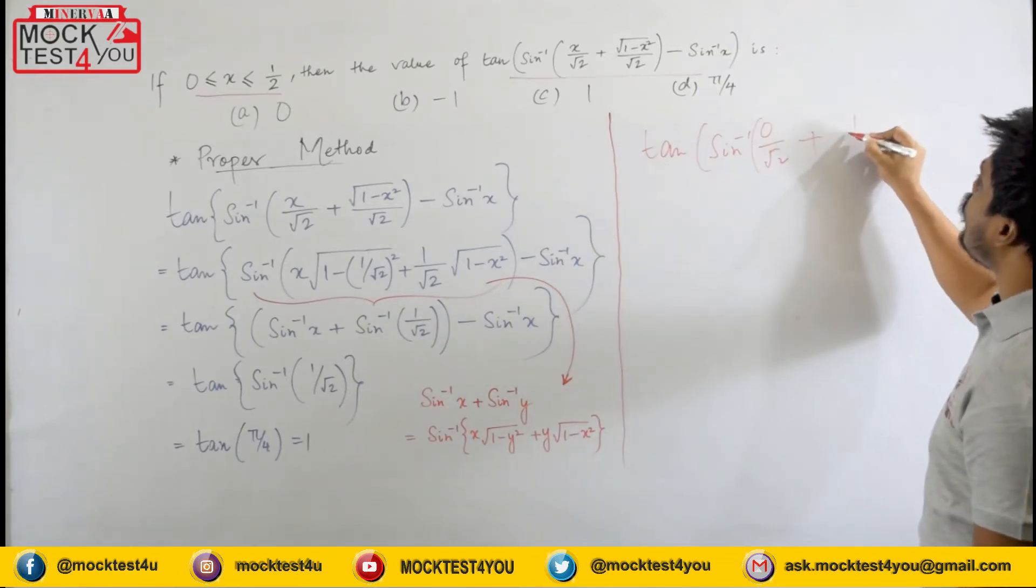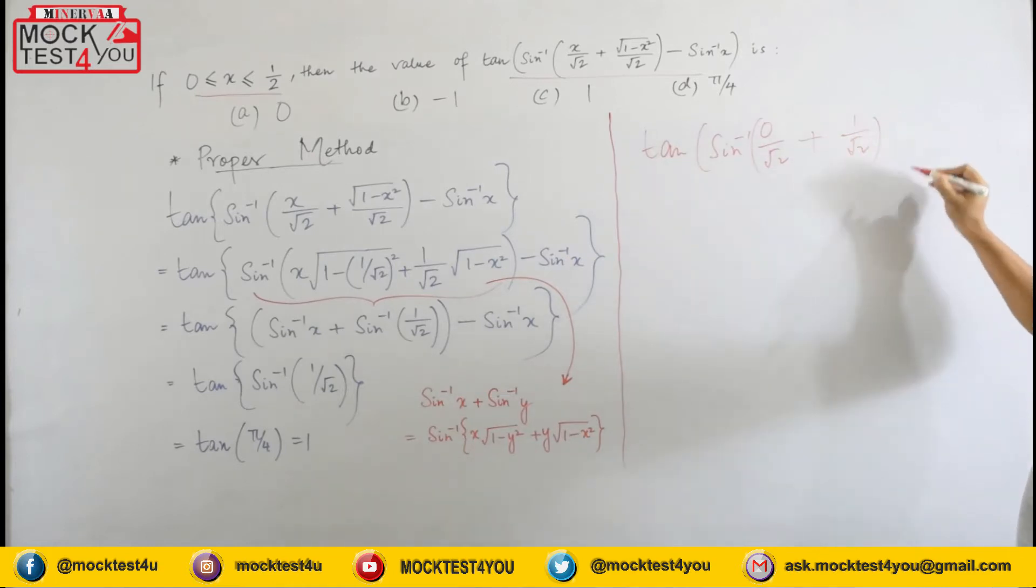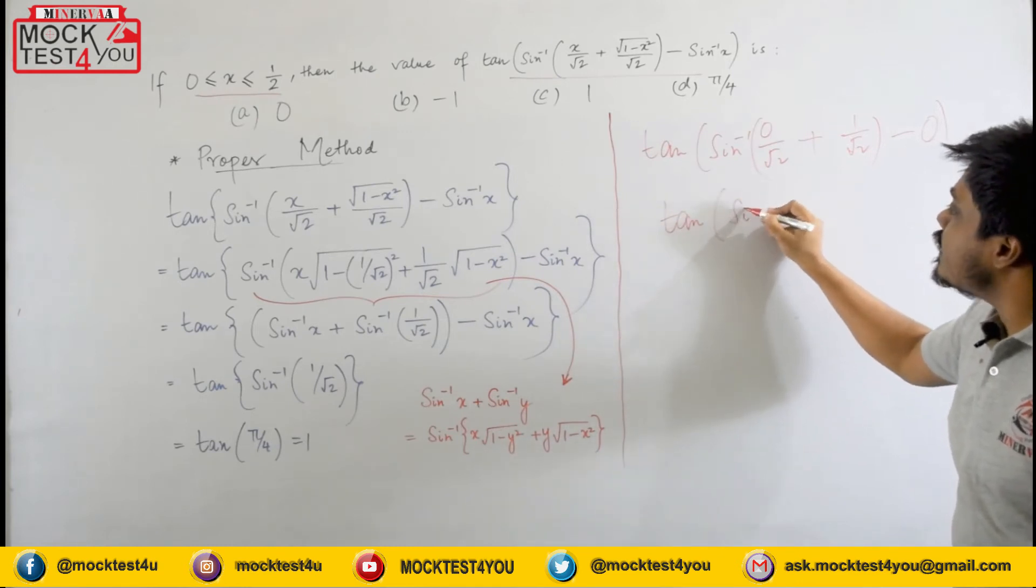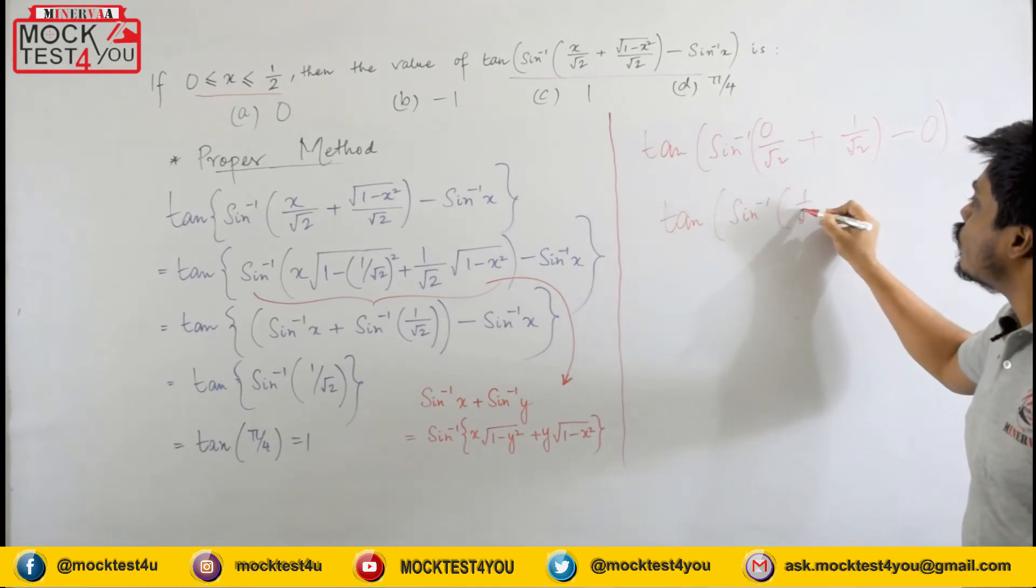0. So we have root over of 1 by root 2 and this one becomes 0 because sine 0 is 0. So what we have basically tan of sine inverse 1 by root 2.